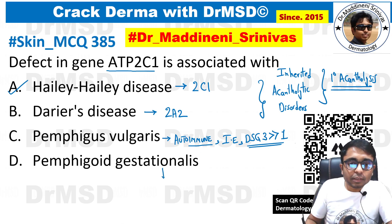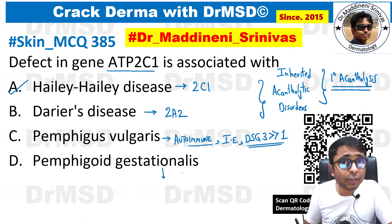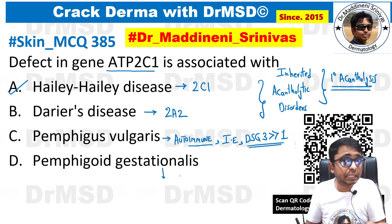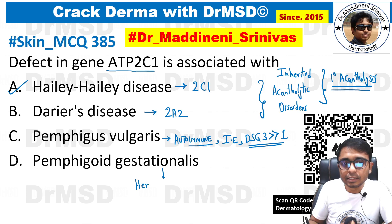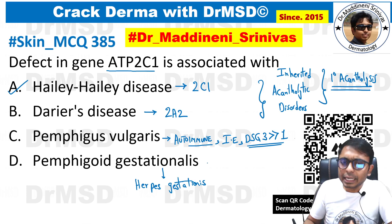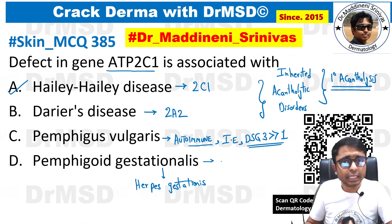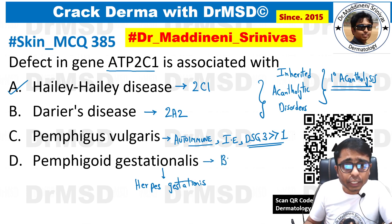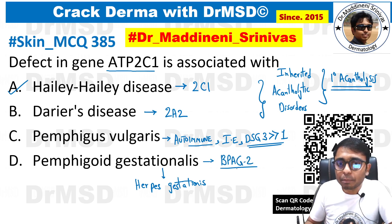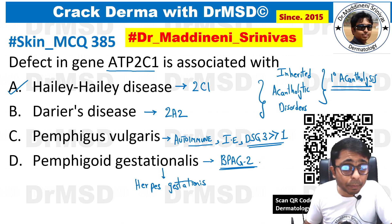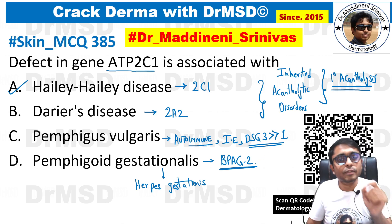Coming to the fourth option, pemphigoid gestationis — also called bullous pemphigoid seen in pregnancy, or herpes gestationis — here there are BPAG2-related antibodies. Antibodies will target BPAG2 in the case of pemphigoid gestationis.